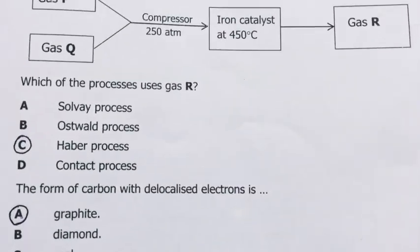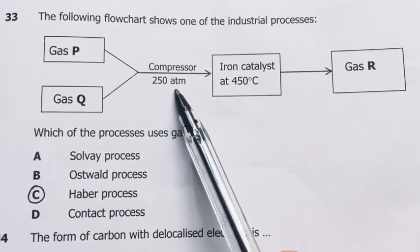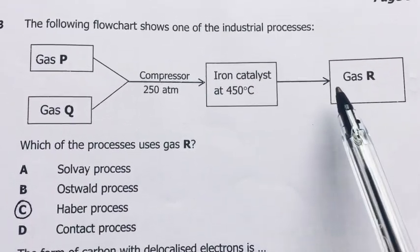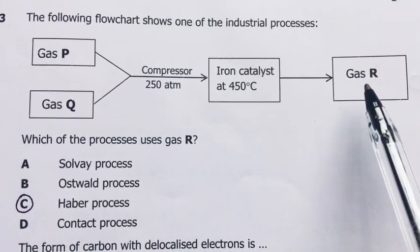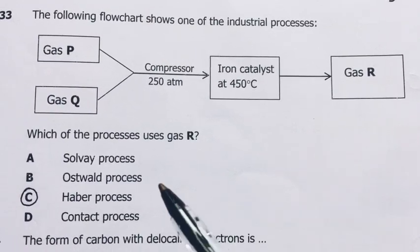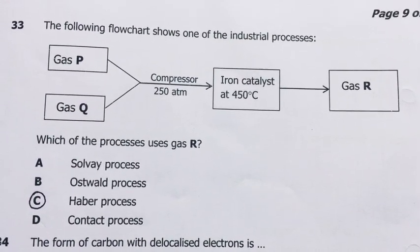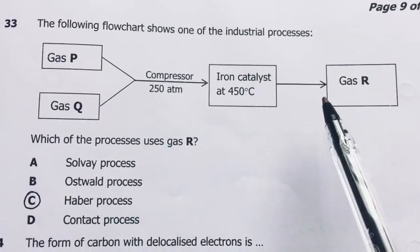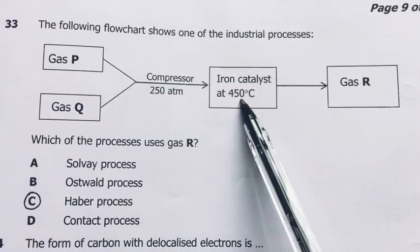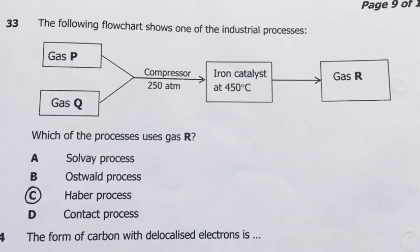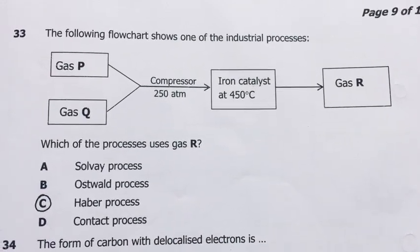Number 33. The following flowchart shows one of the industrial processes. Gas P, gas Q, compressor 250 atmosphere, that's pressure, iron catalyst at 450 degrees Celsius, then gas R. Which of the processes uses gas R? This is the Haber process. They are saying which of the processes uses gas R? This is ammonia, very much likely to be ammonia, because of two gases, the iron catalyst, look at the temperature. So my answer here came out as the Haber process. I don't know if I'm wrong here, you are free to correct it. Please correct this one, check it out, just in case I didn't do it right.